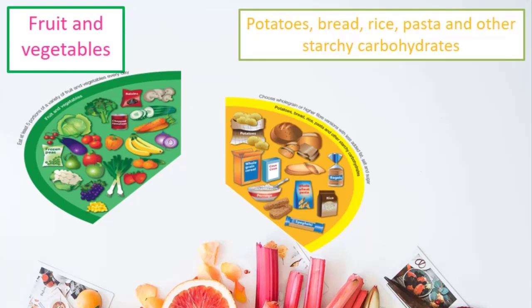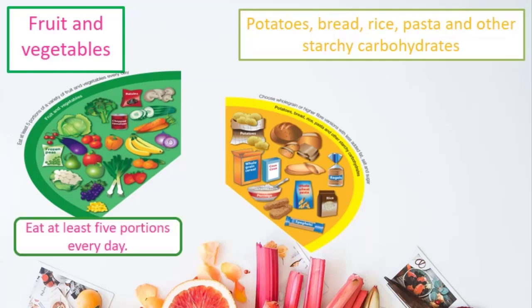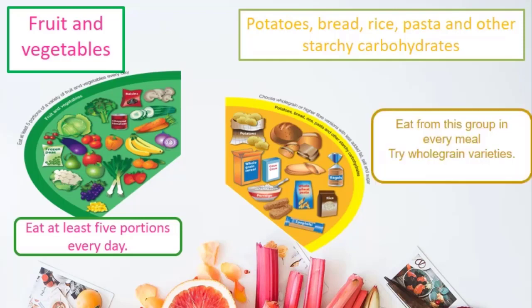What must be included in your daily food? Look at the green plate — it represents fruits and vegetables and you must take five portions from it every day. The yellow plate contains carbohydrates and you must take one item from it.